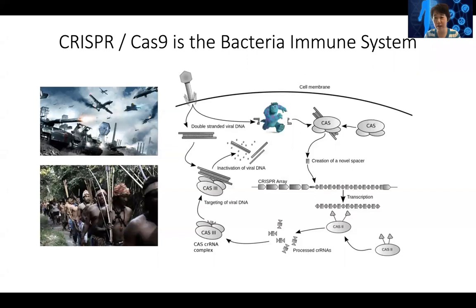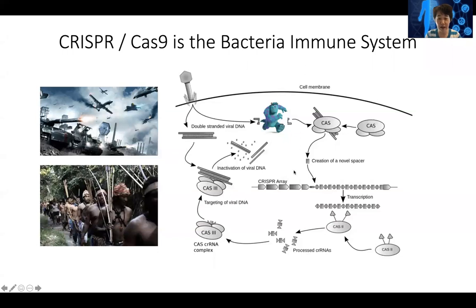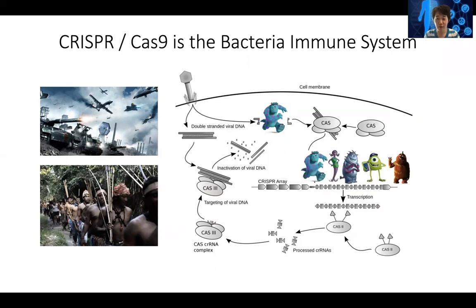To the bacteria, the virus is like a foreigner, an alien. Some bacteria cells will die, but if the bacteria is able to survive the attack, it's going to remember this bad guy. The bacteria will try to identify a unique piece of DNA sequence on the virus and insert it into a CRISPR array — a genomic DNA sequence — keeping a copy of it. Scientists first discovered CRISPR-Cas9 because they saw these little repeat sequences in the genome.